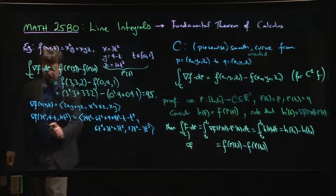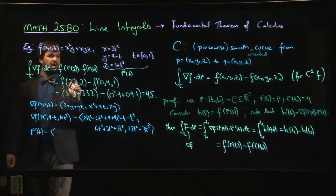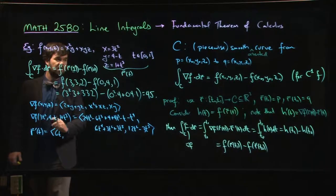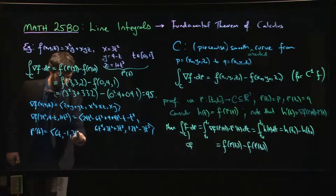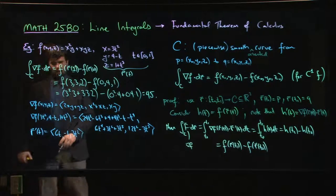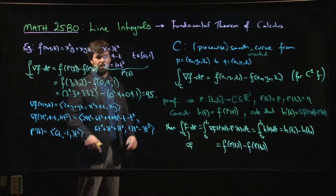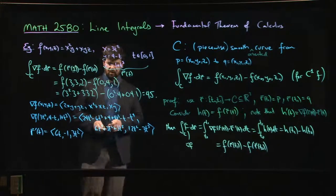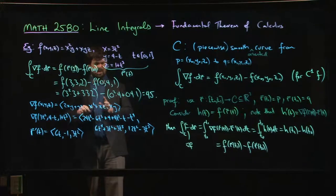You can calculate r prime of t. All right, so we can calculate r prime, 6t, minus 1, 3t squared. And I guess in principle we could take the dot product of these two, we could integrate with t going from 0 to 1, we'd get our answer, should equal to 45, right?